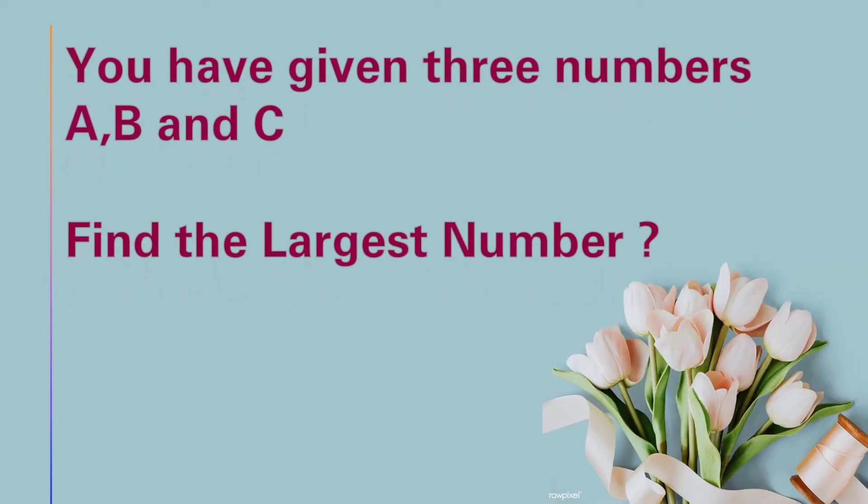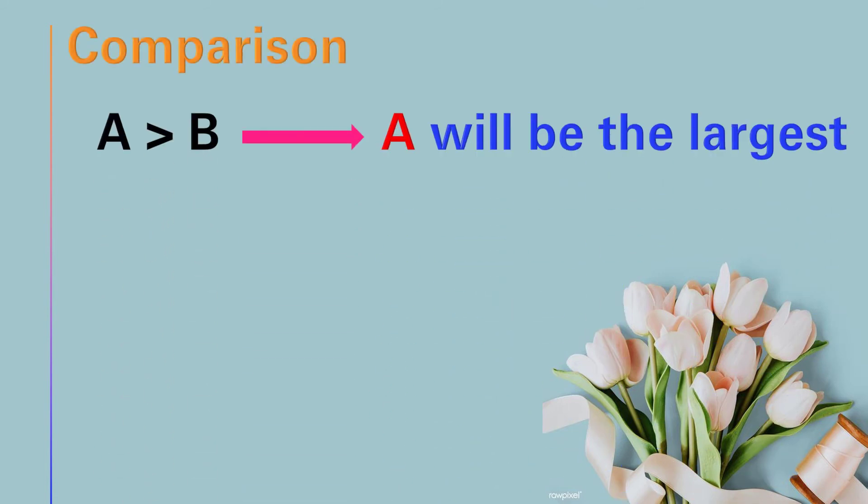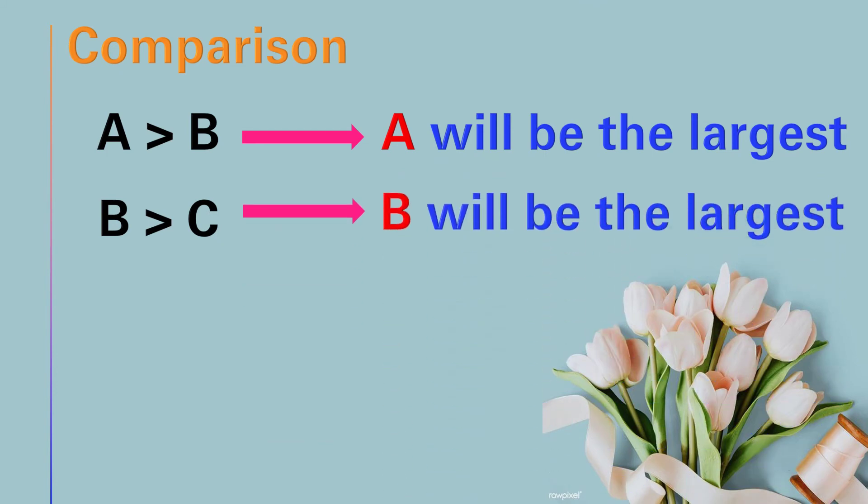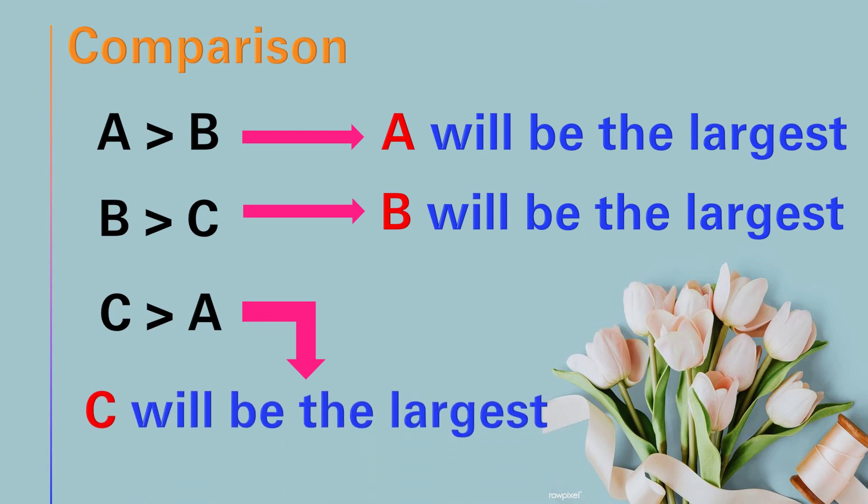Let's do the comparison first. I have three variables, so I should compare all these three variables. If A is greater than B, A will be the largest number. If B is greater than C, B should be the largest one. If C is greater than A, then C will be the largest number.